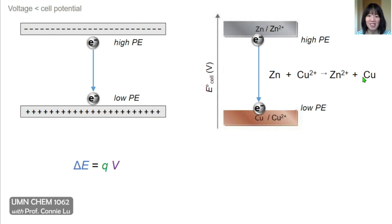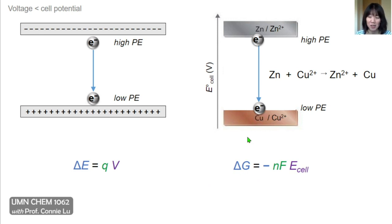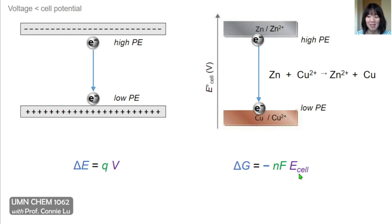In this redox reaction, zinc loses electrons to copper 2+ to form copper metal and zinc 2+. We can also calculate the change in energy — specifically the change in free energy of this reaction. It's equal to a product involving the voltage, or cell potential, and the charge, represented by the moles of electrons N times Faraday's constant F. The negative sign is present because for spontaneity, ΔG must be negative while cell potential is positive.